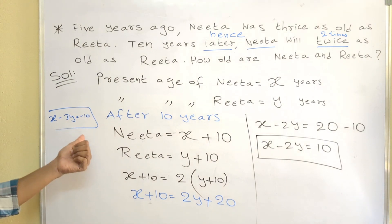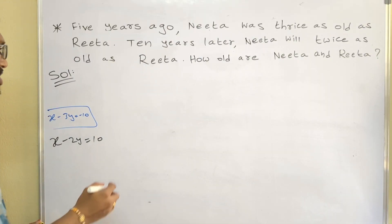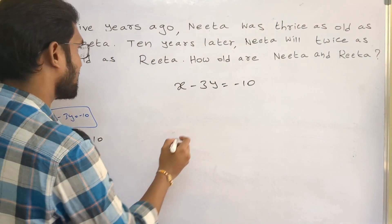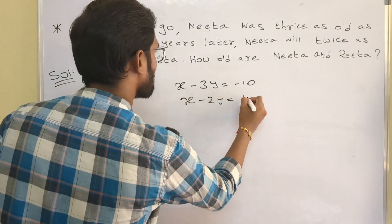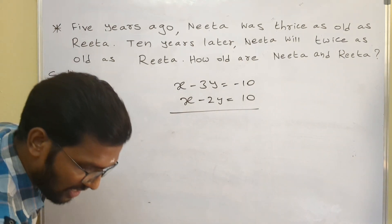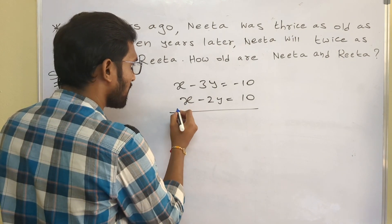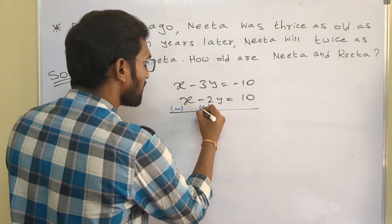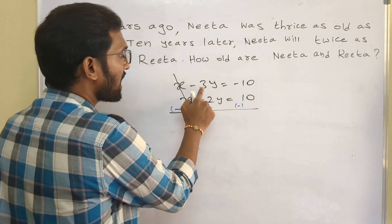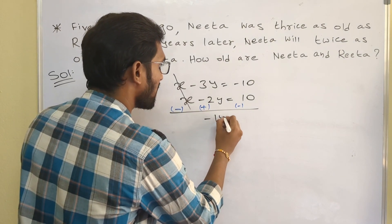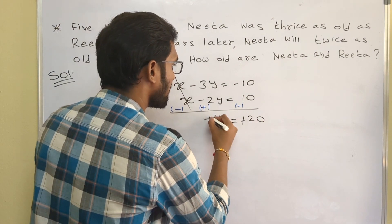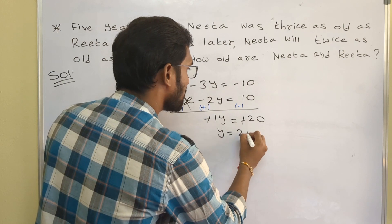Now let us subtract Equation 2 from Equation 1. Equation 1: X minus 3Y equals minus 10. Equation 2: X minus 2Y equals 10. When subtracting, signs of Equation 2 change. X cancels; minus 3Y plus 2Y gives minus Y; minus 10 minus 10 gives minus 20. So minus Y equals minus 20, meaning Y equals 20.